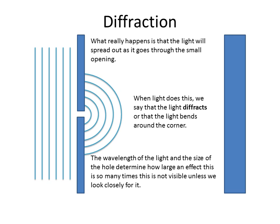The way that it diffracts — the amount that it bends — is determined by the size of the hole and the wavelength of the light, mainly those two factors. These are properties that we will actually be able to see, and they'll give us some things that may not be readily apparent to us when we first look at waves or look at light.